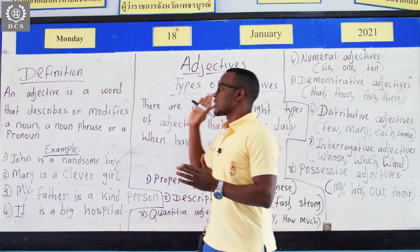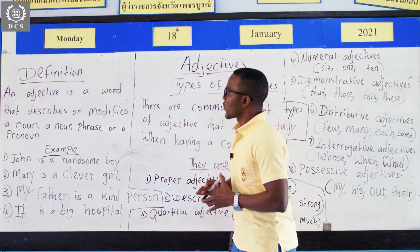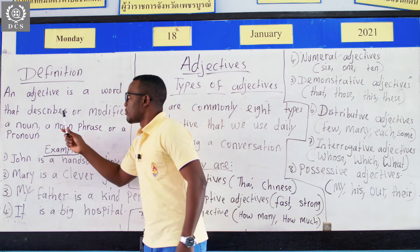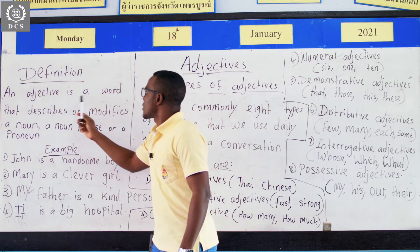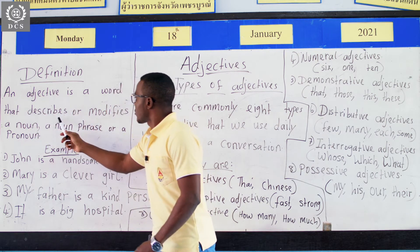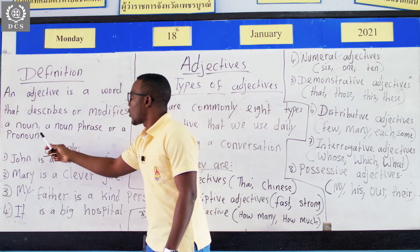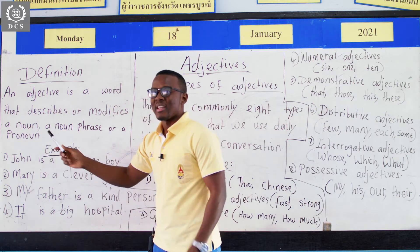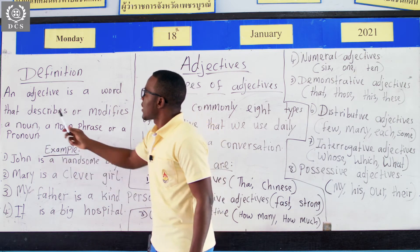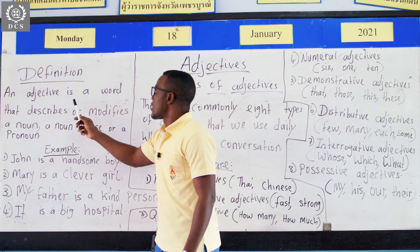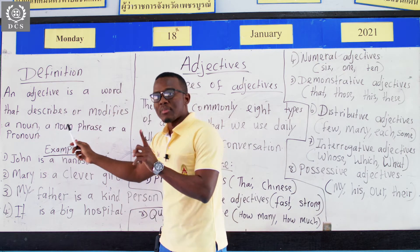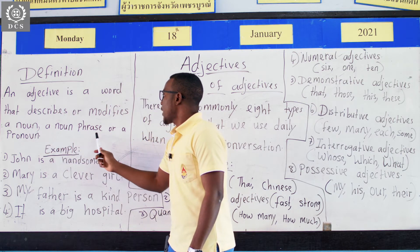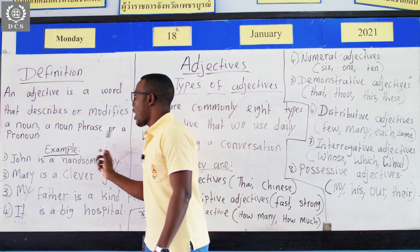Today we are learning about adjectives. Let's look at the definition of an adjective. Look over here. It says: an adjective is a word that describes or modifies a noun, a noun phrase, or a pronoun. One more time — an adjective is a word that describes or modifies a noun, a noun phrase, or a pronoun.